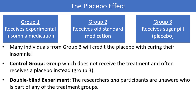A double-blind experiment is one in which the researchers and participants are unaware who is part of the treatment group and who is part of the control group. So if there are six treatment combinations, neither the subjects in the sleep study nor the researchers working with the subjects know who is in each of the six treatment groups. For practical reasons, this isn't always possible, but it is ideal in order to reduce bias.